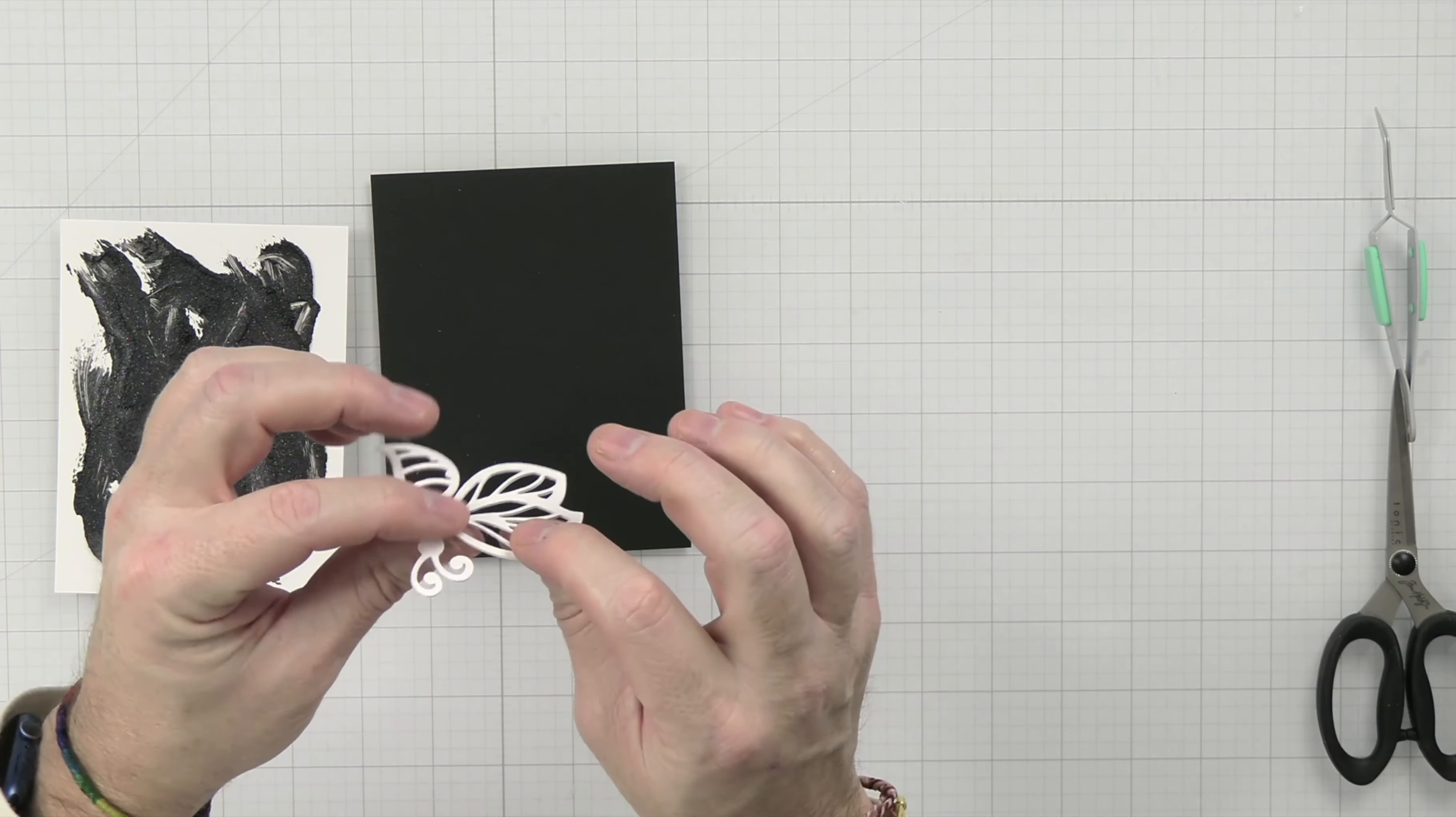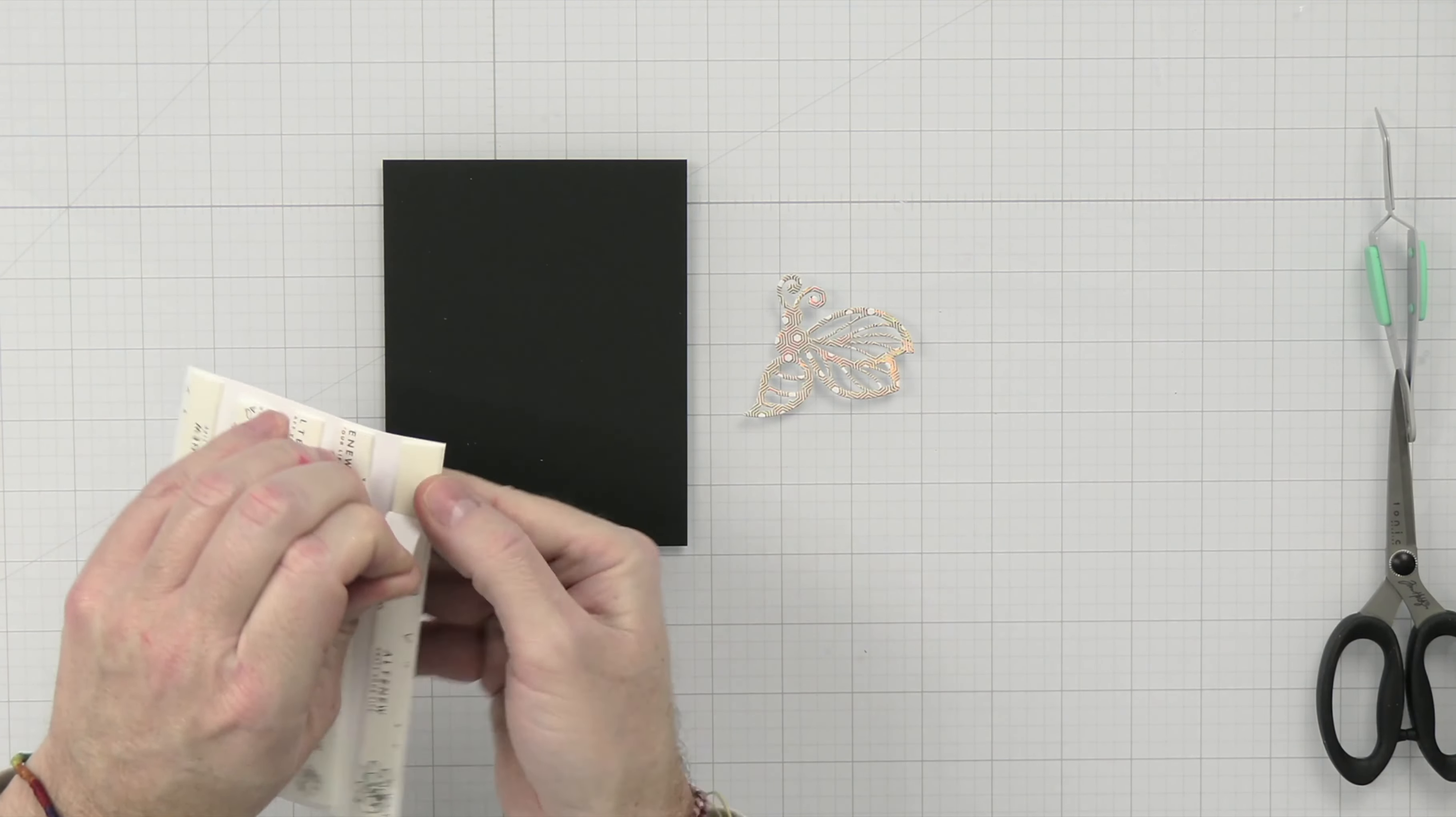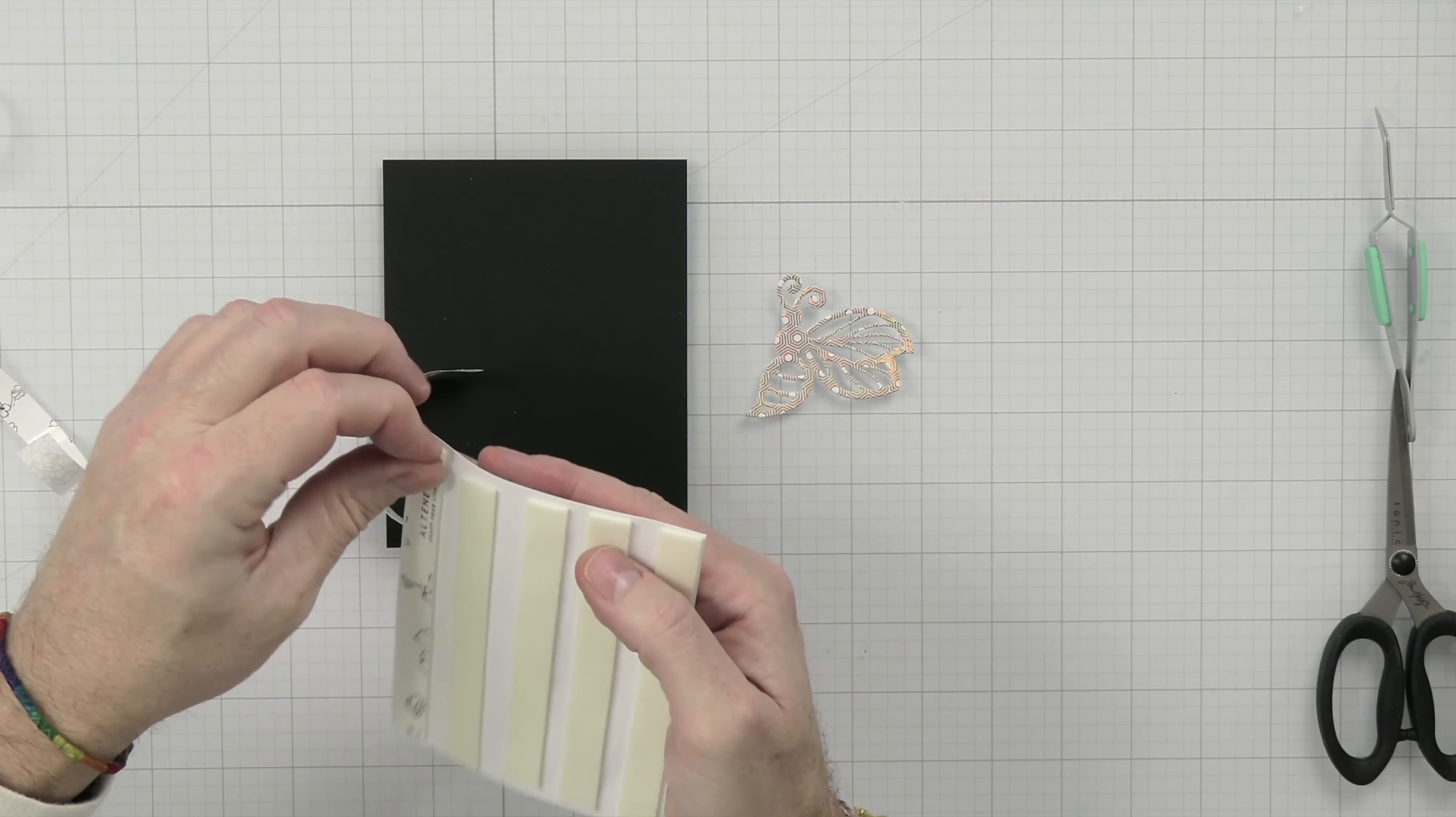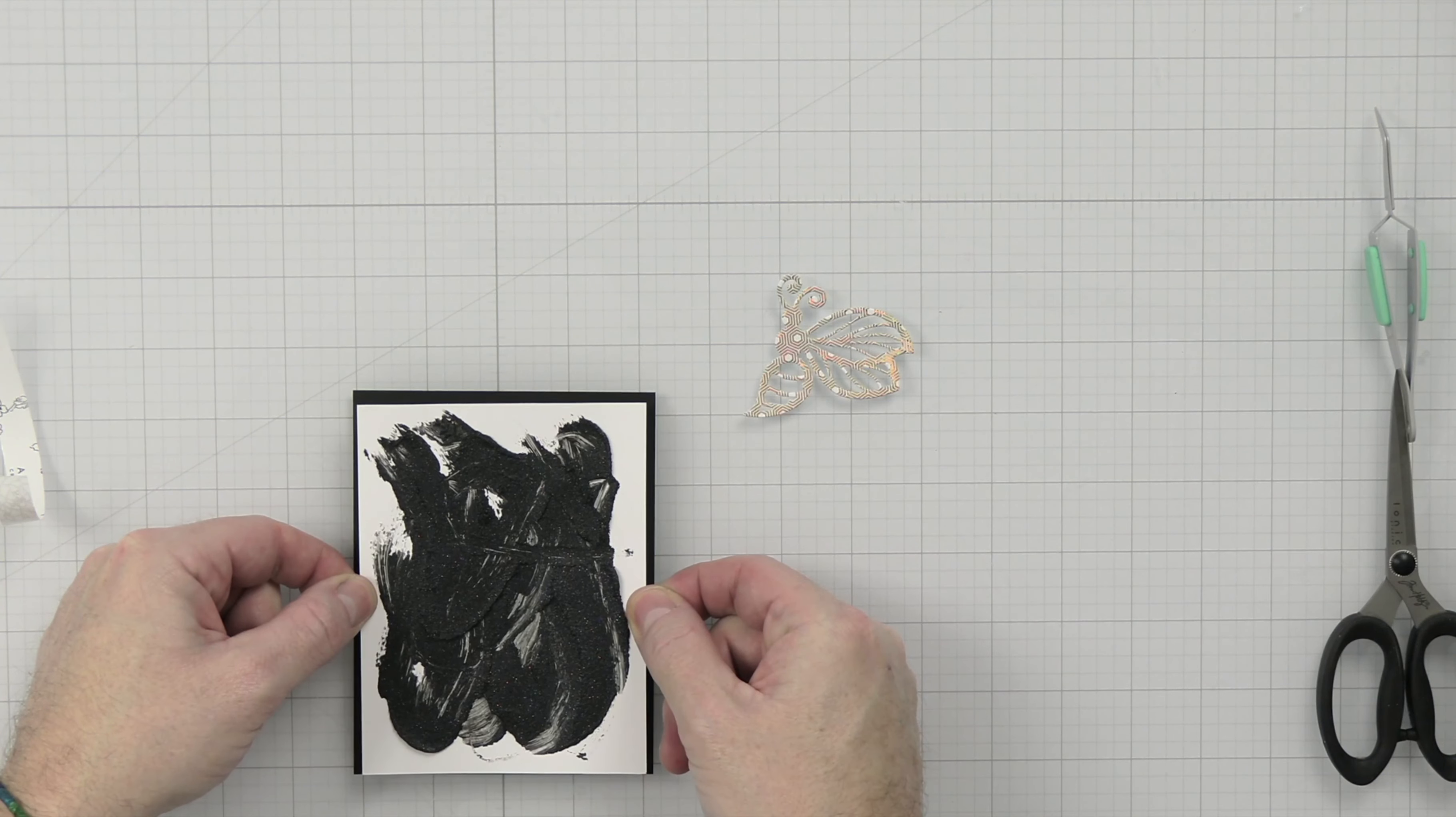I also forgot to tell you guys that off camera, I did actually cut three more layers of this bee and then layered it all together so that it was a little bit thicker. So basically now to finish off this card, I'm just going to take off the backings of the pieces of foam tape here.